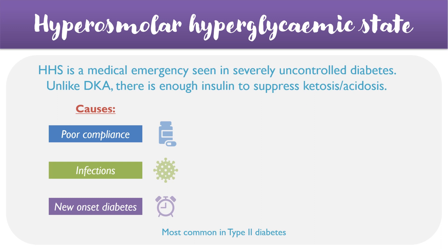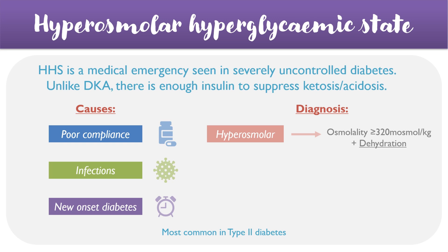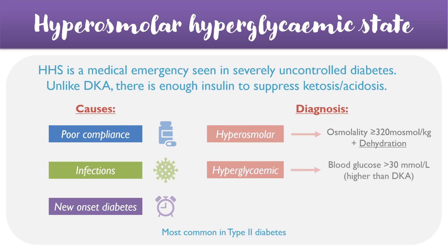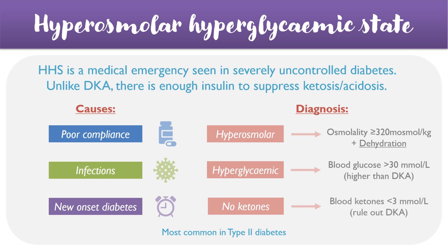In terms of the diagnosis itself, we can look at the terminology. Hyperosmolar refers to an increased osmolality of greater than 320 milliosmoles per kilogram, coupled with dehydration symptoms. Hyperglycemic refers to values of blood glucose above 30 millimoles per litre, which is higher than the cutoff for diabetic ketoacidosis. Another key difference between DKA and HHS is that there are no ketones present in the latter — values are usually below 3 millimoles per litre — and this can be used to rule out the alternative diagnosis.